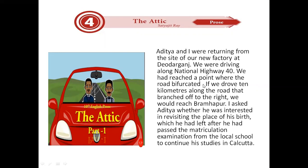When they reached the point where the road bifurcated — where the road divided into two — they drove 10 kilometres along the road that branched off to the right. They could reach Brahmapur. They were travelling along National Highway 40, and at one point the road divided. Taking the right side for 10 kilometres would lead them to Brahmapur.